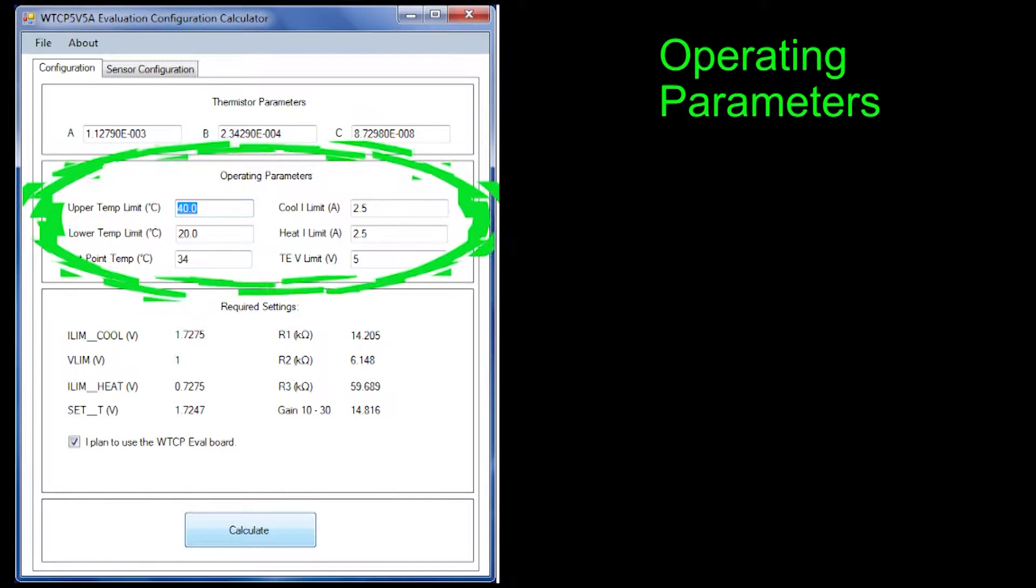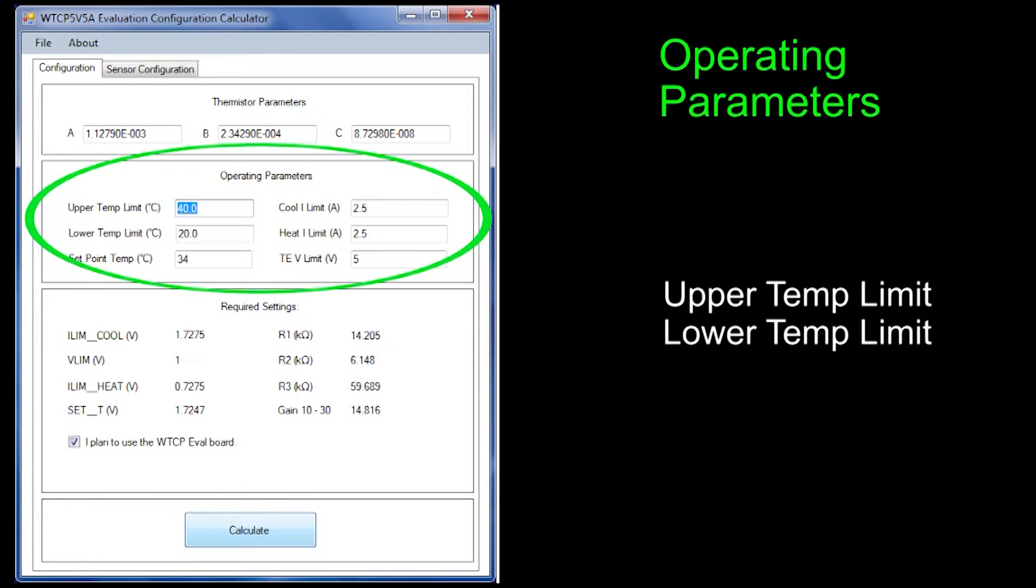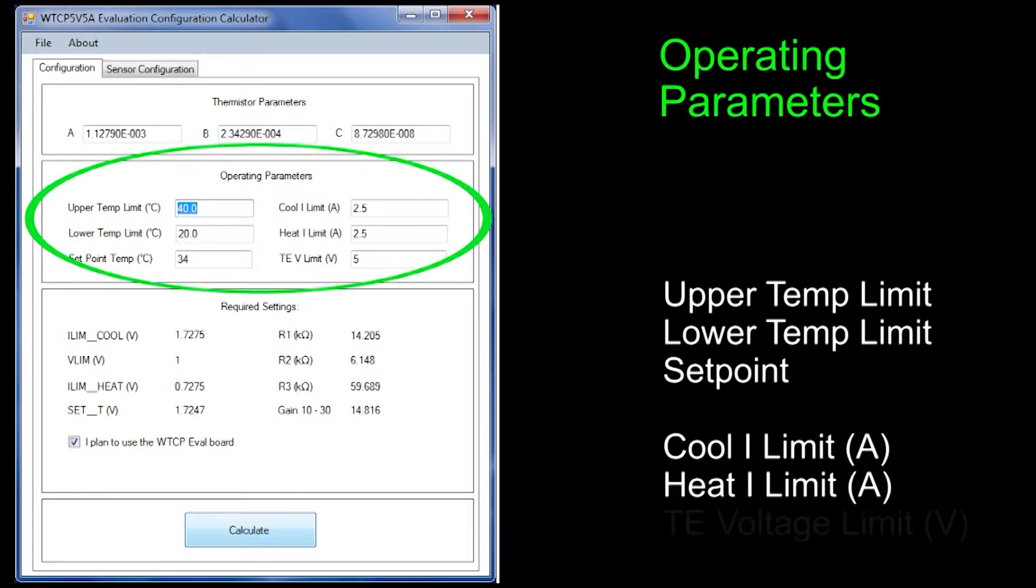The next section details several operating parameters specific to your application. Upper and lower temperature limits should be in a narrow band of about 20 degrees C around your set point. The set point is the temperature you want your load to settle at long term. The cooling and heating current limits should be below the damage threshold specified in the thermoelectric manufacturer's datasheet. The voltage limit also comes from this datasheet.